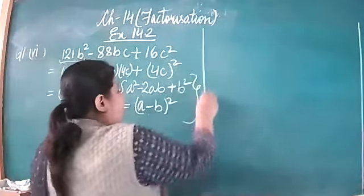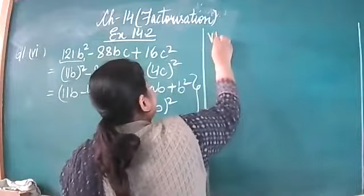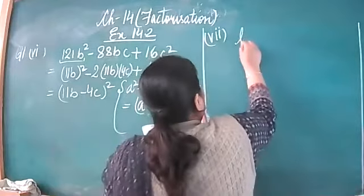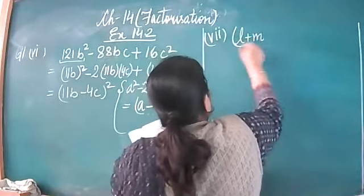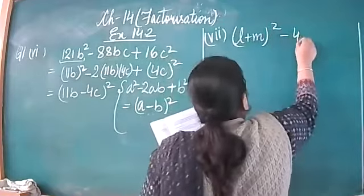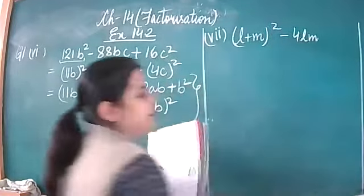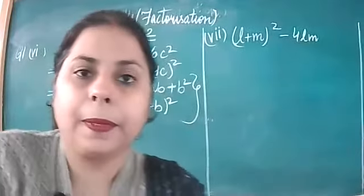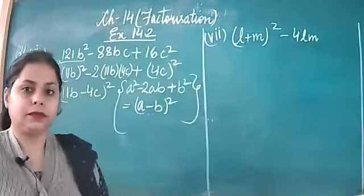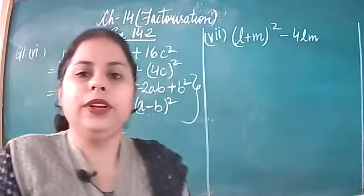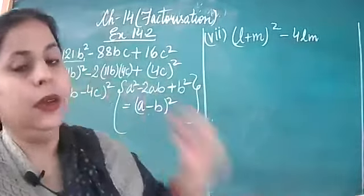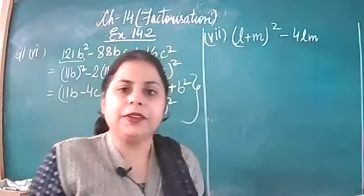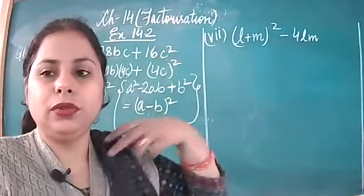Next, let's discuss the 7th part. The expression is (l plus m) whole square minus 4lm. Please look at the board. This equation is going to be a little bit different — not difficult, but different.